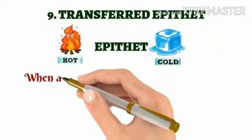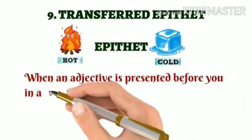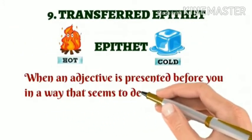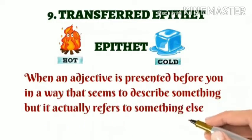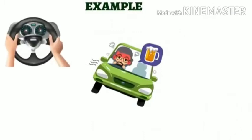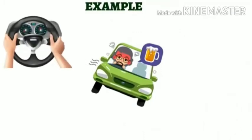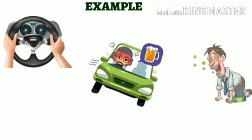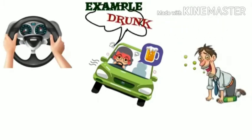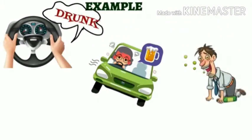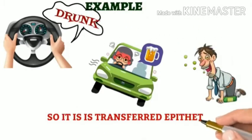Transferred Epithet. Epithet means adjective. When an adjective is presented in a way that it seems to describe something, but it actually refers to something else. Example: 'Drunk Driving.' Driving is a skill — it's not drunk. Basically the driver is drunk, and the adjective of the driver is transferred to the driving. So it is transferred epithet.